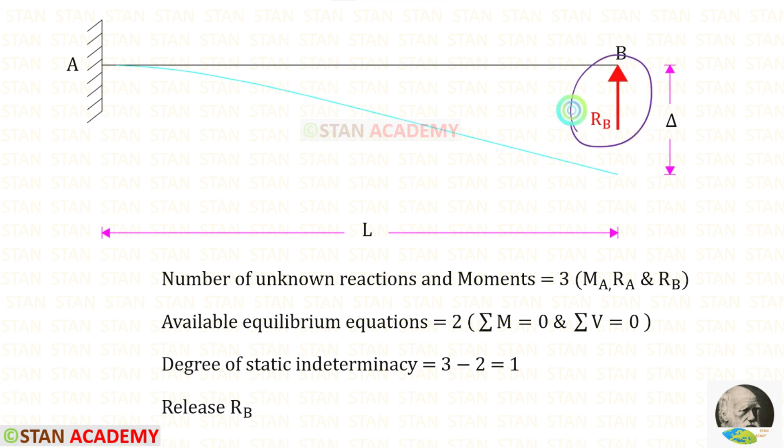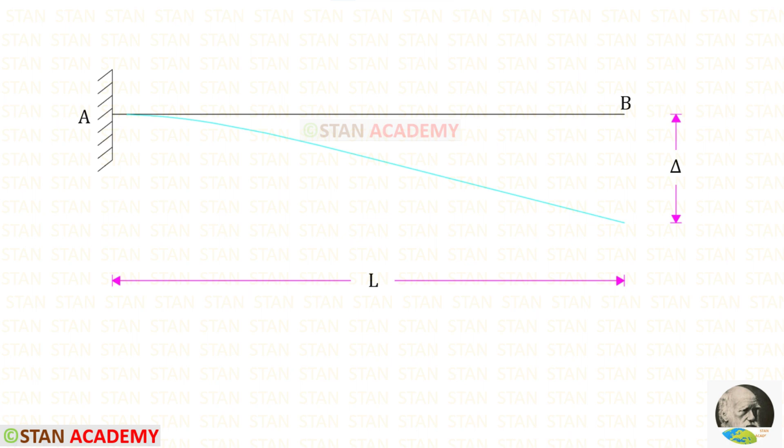Since the support b sinks we have to release rb. You can see that I have released rb. Previously it was a propped cantilever beam but now it is a cantilever beam.